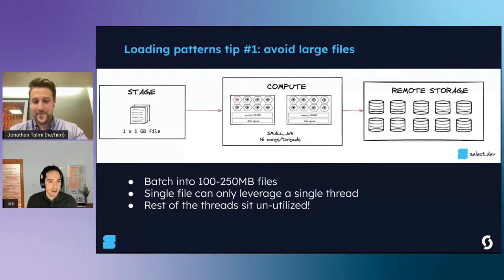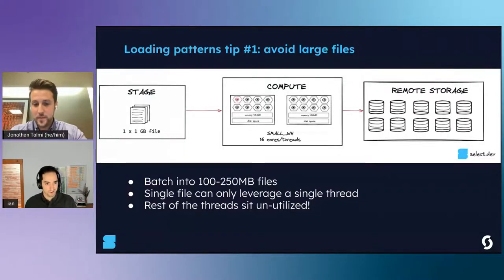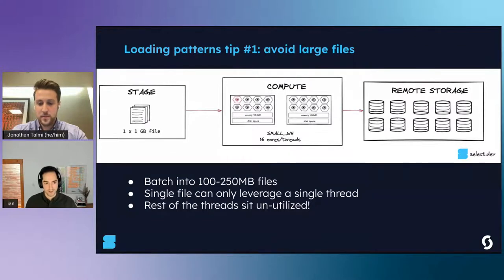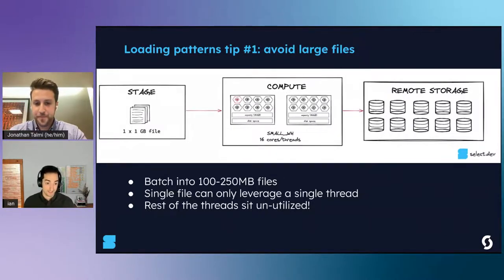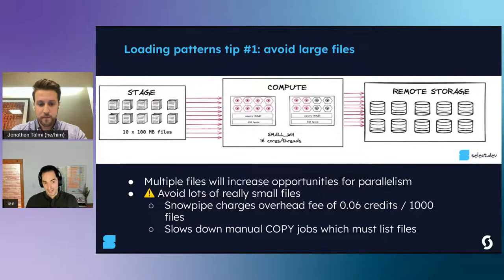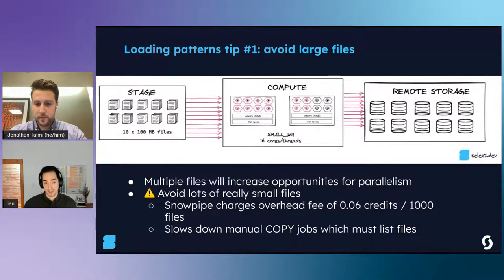I'll end with two loading patterns that should be broadly applicable to most companies. The first is to avoid large files. In this example, a single 1-gigabyte file is loaded on a small warehouse. A small warehouse contains 2 nodes - roughly 16 cores total. If you're loading one file, Snowflake cannot parallelize that - it can only use one of those 16 cores. Instead, split up your file: Snowflake recommends targeting 100 to 250 megabyte files. If we split the 1 GB file into ten 100 MB files, we'd saturate 10 out of 16 cores - much better. As a result you'll get cheaper costs because the load completes faster and the warehouse isn't up as long.